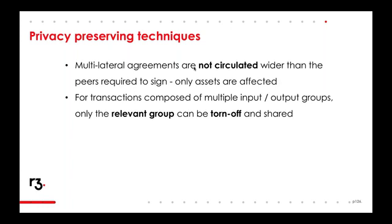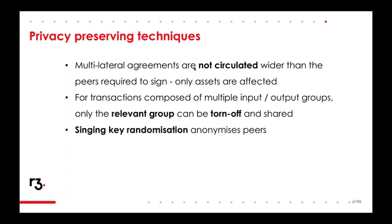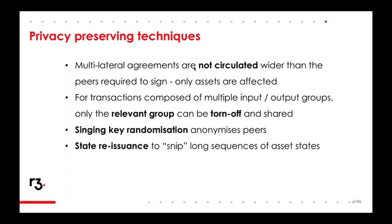Using the properties of the Merkle tree, the oracle can still verify that the transaction is valid and all components you say are there are indeed there. Another thing we can do is use key randomization — instead of using keys strongly linked to a real-world identity, we can use random keys generated on a per-transaction basis. This effectively anonymizes peers. It works relatively well on Ethereum and Bitcoin. In Corda, there's no reason to publish your public keys as there is in Ethereum and Bitcoin, so it's actually more difficult to ascribe an identity to a random public key. We can also perform state reissuance — getting an issuer to atomically redeem and then reissue an asset on the ledger, effectively snipping long state sequences and reducing the amount of data leaked.